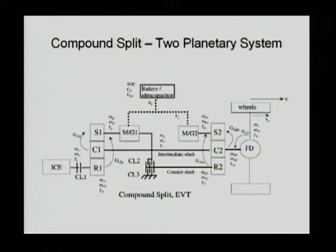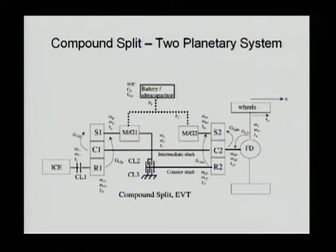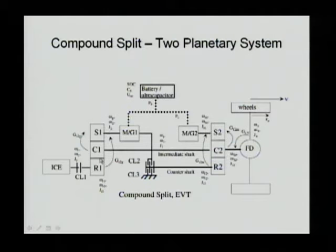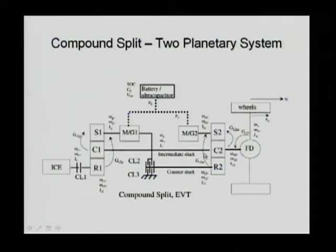Now we're going to look at this in more detail — how it operates both in terms of dynamic and steady state. In this diagram, it's a simplified drawing where we include S1, C1, R1 — the first planetary gear — with the sun gear connected to MG1, ring gear connected to ICE, and C1 connected to C2 and to the final drive.